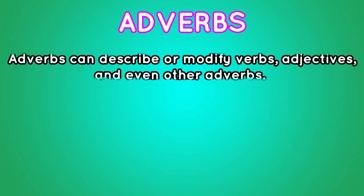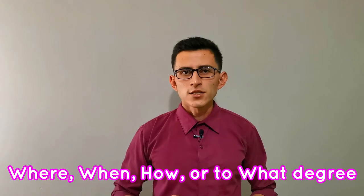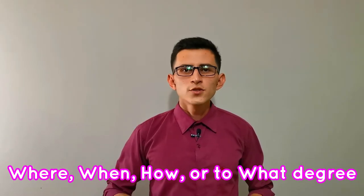Now let's move to adverbs. They have similarities with adjectives, as they have the same function — to describe or modify other words. The difference is that adjectives describe nouns and noun equivalents, whereas adverbs can describe or modify verbs, adjectives, and even other adverbs. Let's see an example: "Michael Jackson danced fantastically." You can find out if a word is playing the role of an adverb by asking the questions where, how, or to what degree.